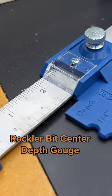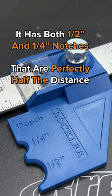Rockler bit center depth gauge. It has both half and quarter inch notches that are perfectly half the distance.